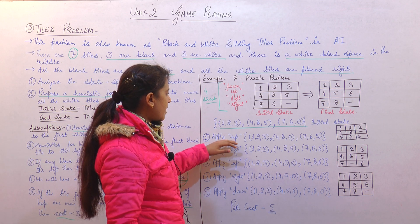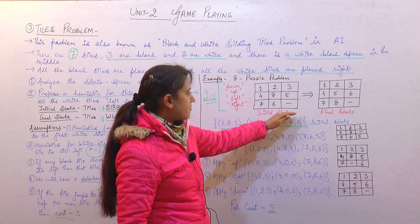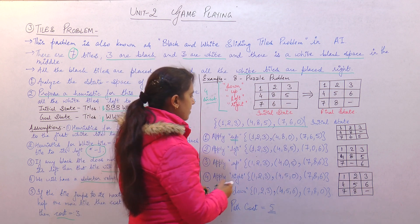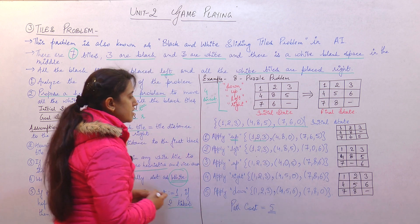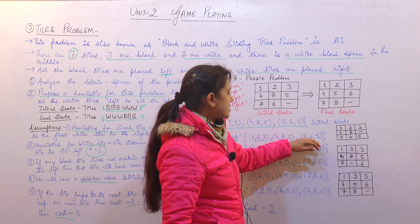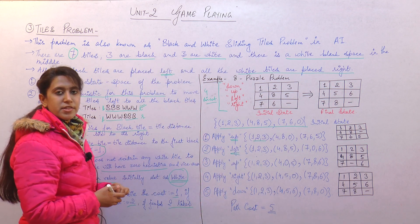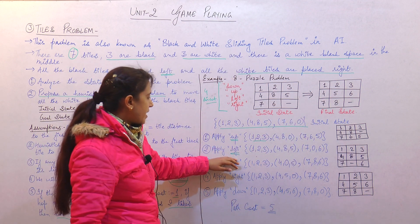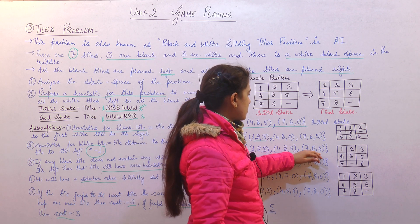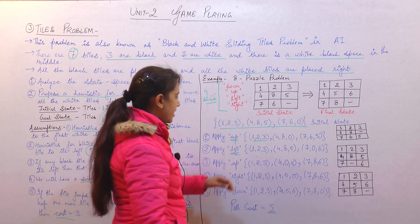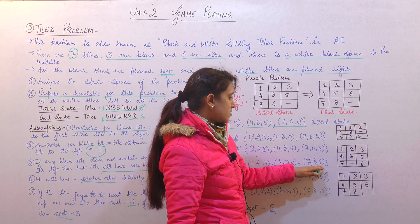Next, applying left gives first row 1, 2, 3; second row 4, 8, 5; third row 7, 0, 6. Then applying up again gives first row 1, 2, 3; second row 4, 0, 5; third row 7, 8, 6. Then applying right gives first row 1, 2, 3; second row 4, 5, 0; third row 7, 8, 6.